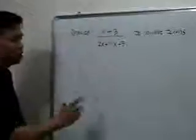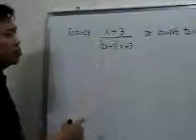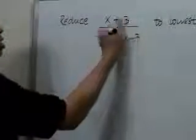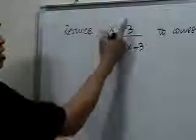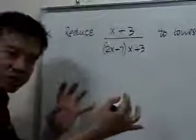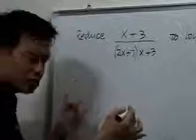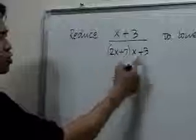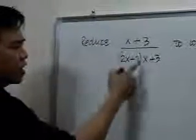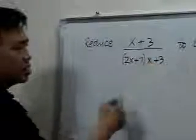Now, before we go further, I would just like to point out that you cannot cancel this x plus 3 with this x plus 3. Because x plus 3 in the numerator is considered as one term, while x plus 3 here belongs to two different terms, x here and 3 as a separate term.